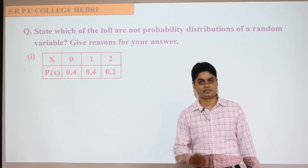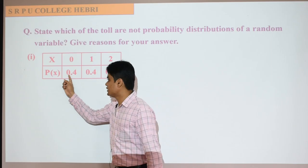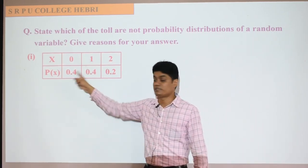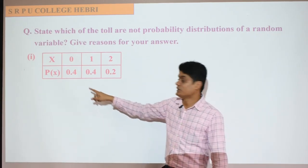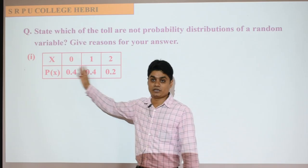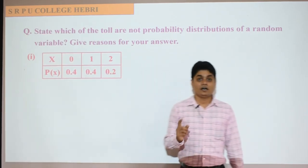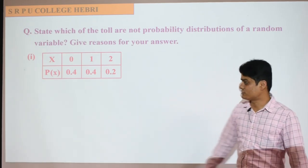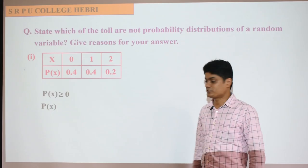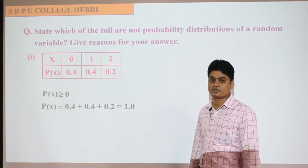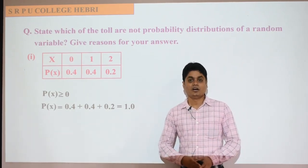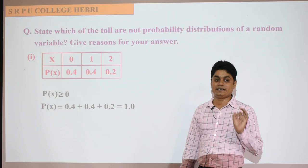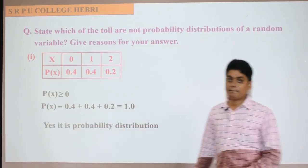Now, what about this distribution — is it a probability distribution? First, check the second row for negative values. There are no negative values. Also, probability of each event should be less than one. All the numbers are less than one and no negative numbers. Now as a last step, add all the numbers and check whether the sum is equal to one. The values are 0.4, 0.4, 0.2. So 0.4 plus 0.4 is 0.8, plus 0.2 is 1.0. All three conditions are satisfied — everything is positive, everything is less than one, and the sum equals one. So the given distribution is a probability distribution. The answer is yes.